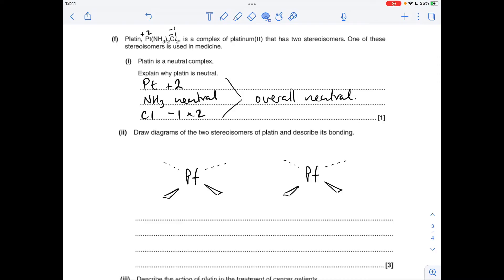Next part of F, we've got to draw the two stereoisomers of platinum and describe its bonding. You'll notice I've already put up the framework for these square planar complexes. Platinum forms square planar complexes, so they're flat and all the bond angles are 90 degrees.